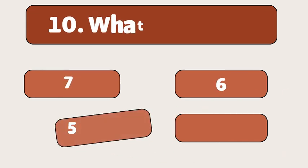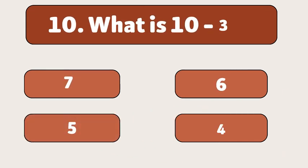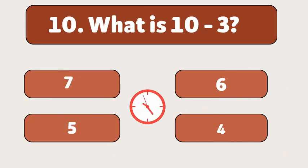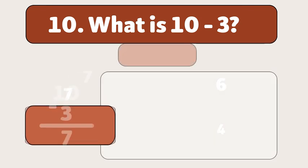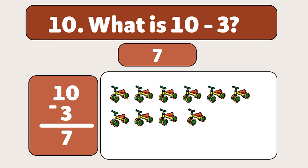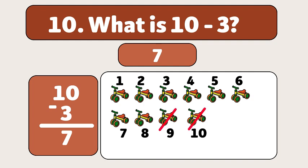What is 10 minus 3? The answer is 7. We start with 10 bicycles and take away 3. Let's count: 1, 2, 3. We have 7 bicycles now.